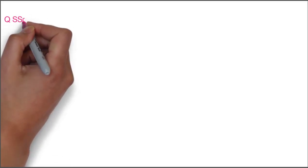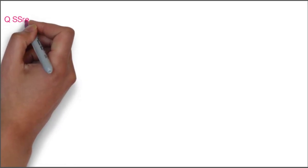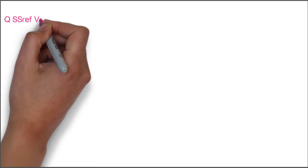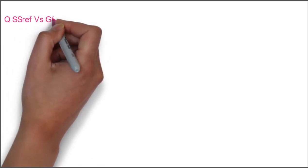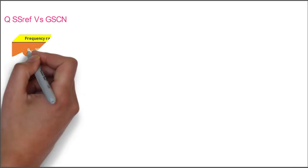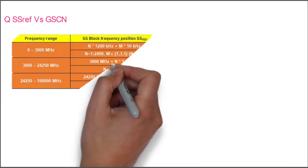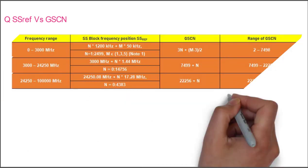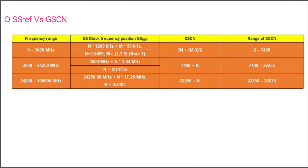We can see the relationship between SSB center frequency point and GSCN. We will try to understand the conversion from SSB reference to GSCN and GSCN to the SS reference. In this table you can see the range of frequency, SS block frequency position (SS_ref), GSCN, and range of GSCN.